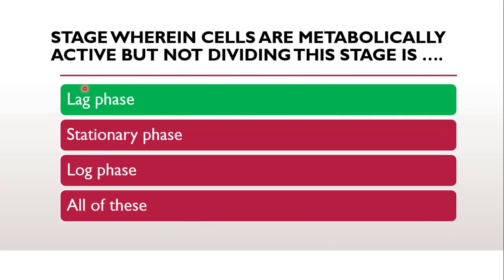We just discussed that lag phase is the very first stage of the bacterial growth curve wherein all the cells are metabolically active, but they are not dividing. They are preparing themselves for division — they allow the synthesis of proteins and other molecules necessary for replication, but they will not divide by themselves. So the correct answer is lag phase.